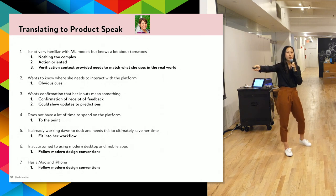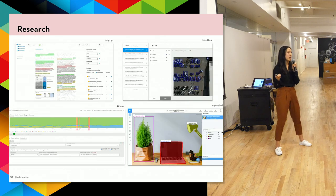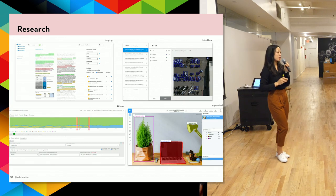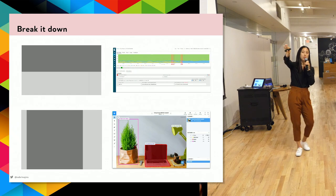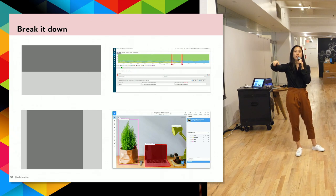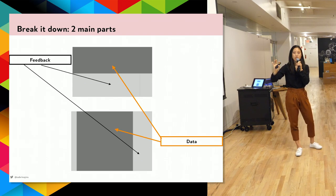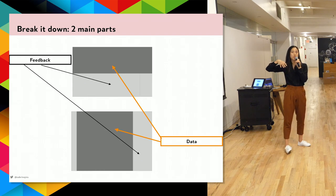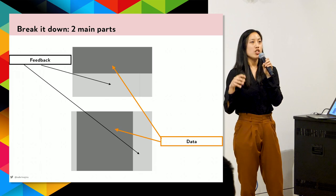We can start by looking at what annotation platforms already exist. Here are four actual annotation platforms — one, Label Box, just raised a Series A, which shows these things are doing well. We can see they have two major areas of screen real estate: a very large area for data and a very large area for feedback. Annotation platforms that enable fast annotation are composed of these two parts.